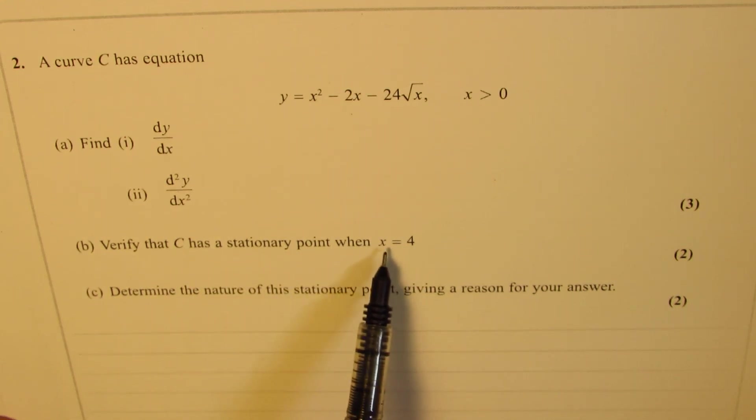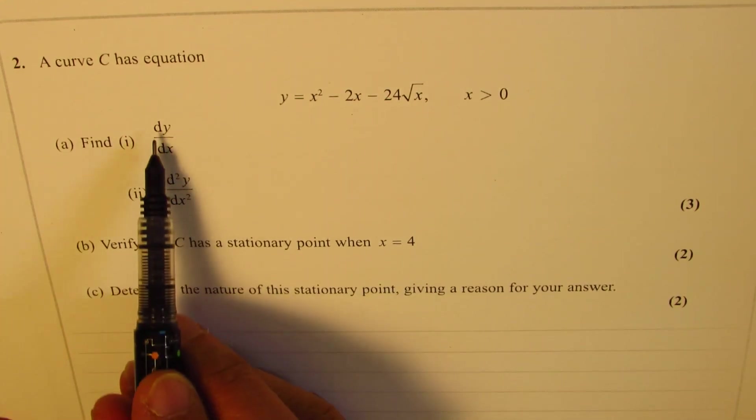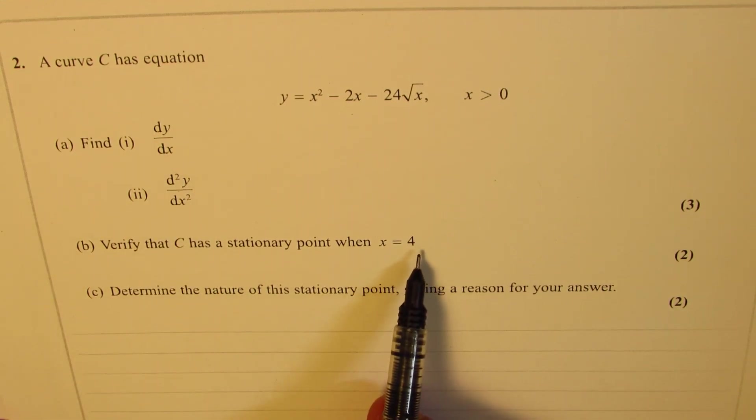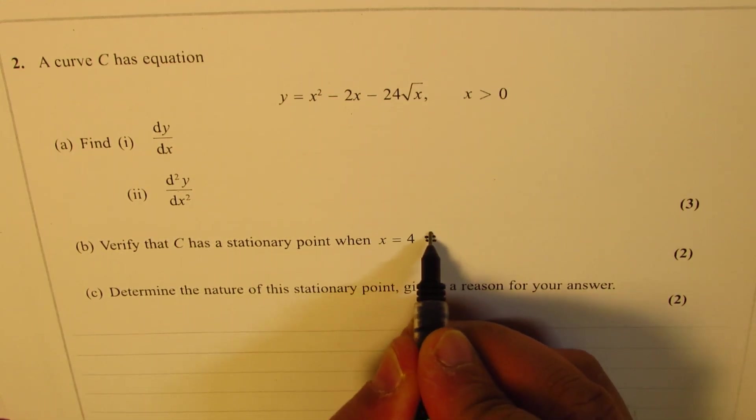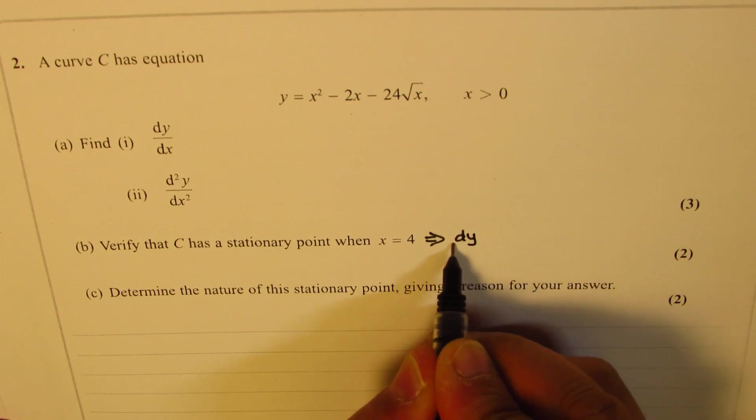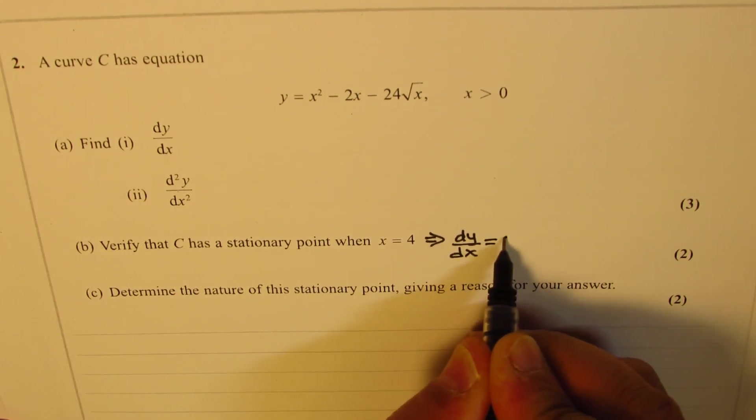So when we say stationary point, it really means that dy/dx should be equal to 0. So that means dy/dx equals 0.